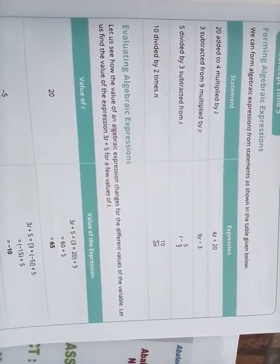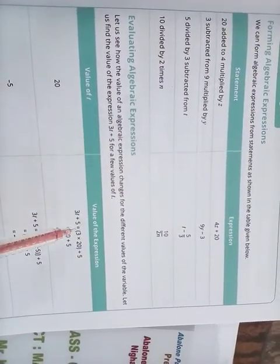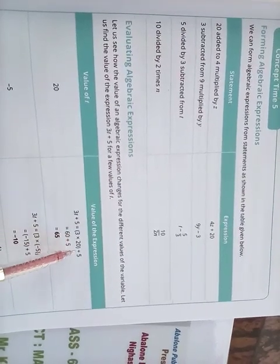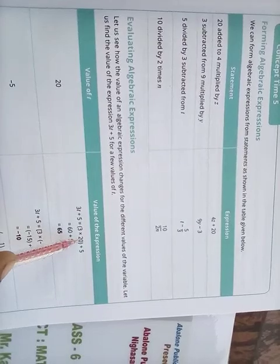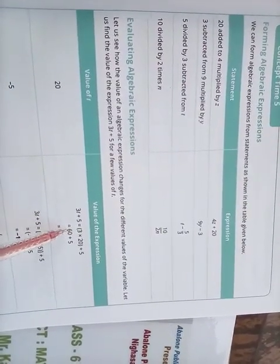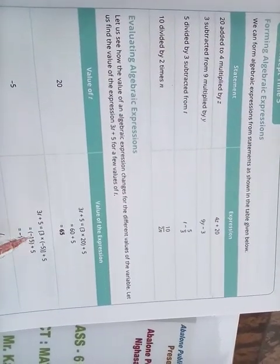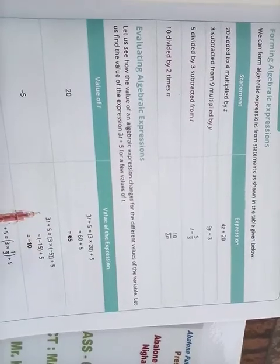Now evaluating algebraic expressions. Here the expression is 3t plus 5. When t equals 20, 3 multiplied by 20 plus 5. What do we do? 3 multiplied by 20, we get 60. 60 and 5 is 65. It means the answer is 65.